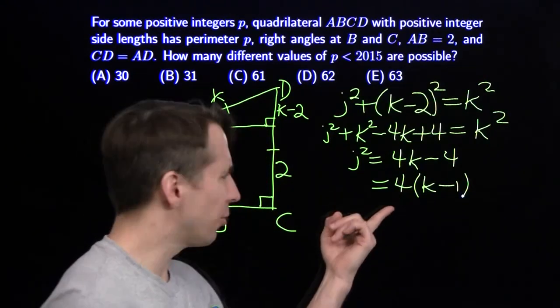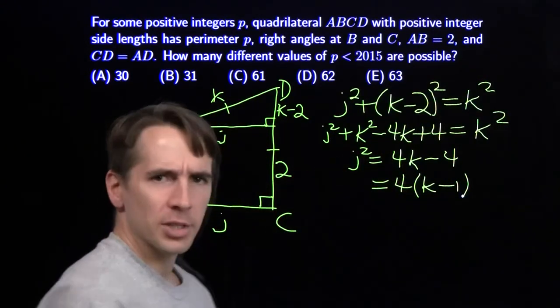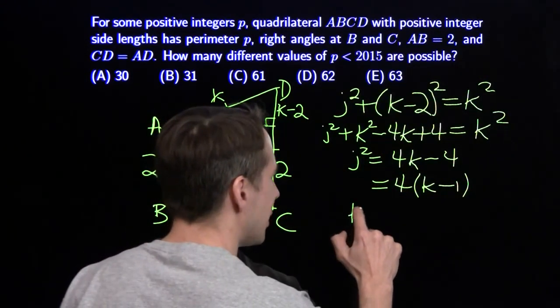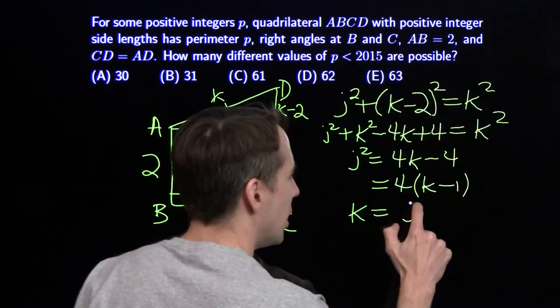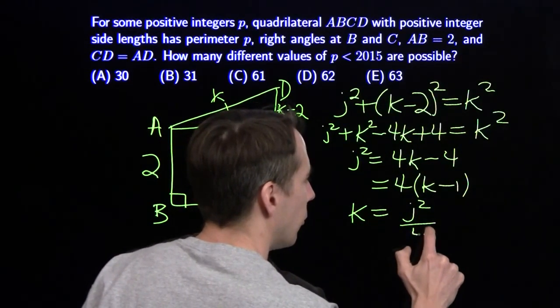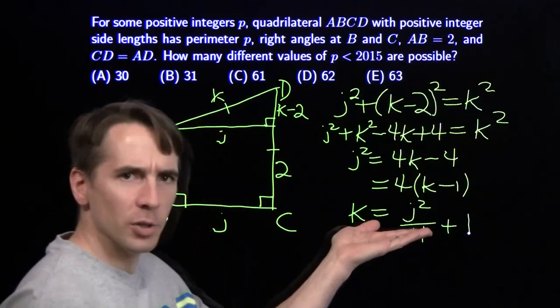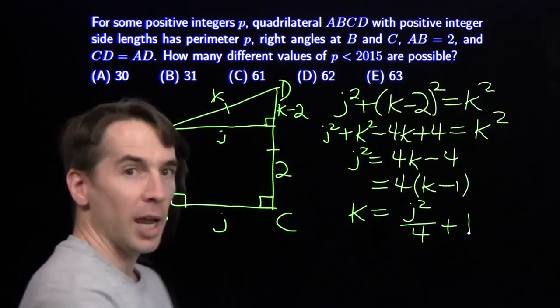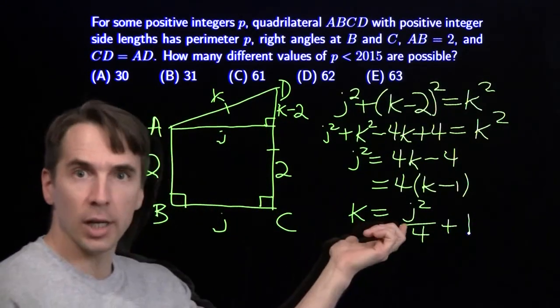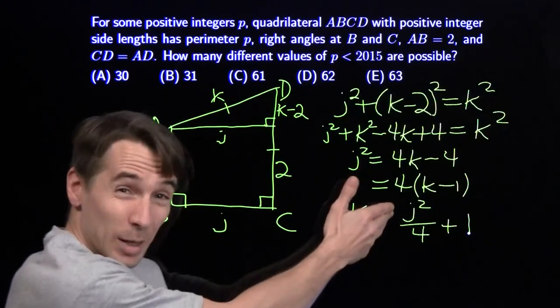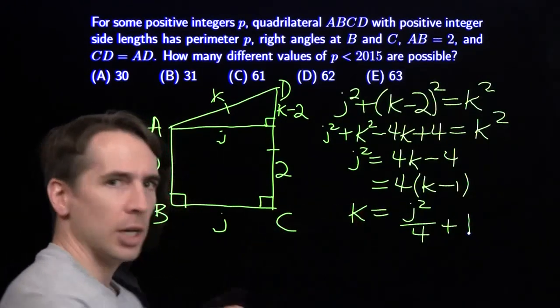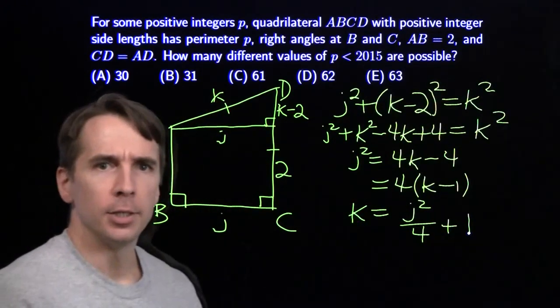We can also solve for K. We can divide both sides by 4 and add 1. We can say that K equals J squared over 4 plus 1. And in this view, it's really clear. J has to be even in order for K and J to both be integers. And any time J is even, K and J are both integers, and we have a nice integer perimeter.